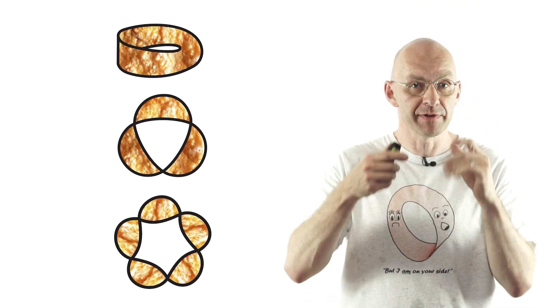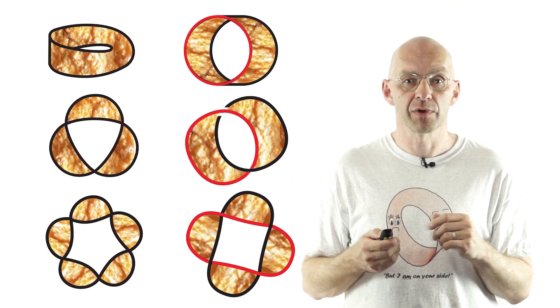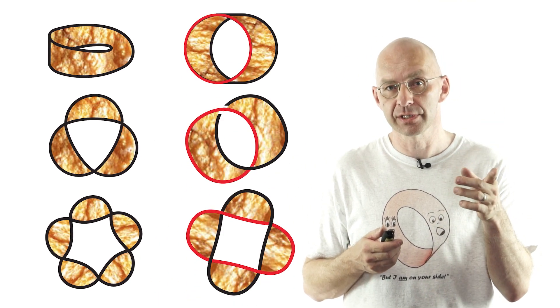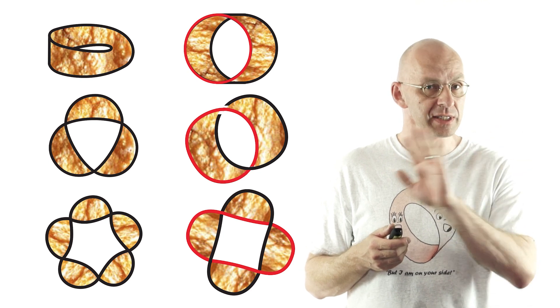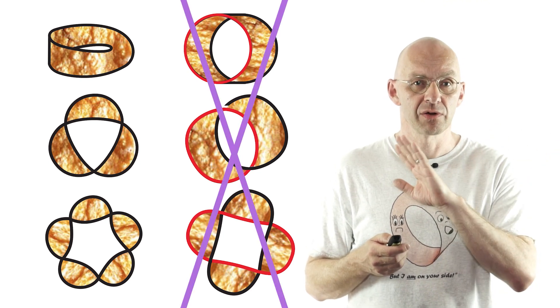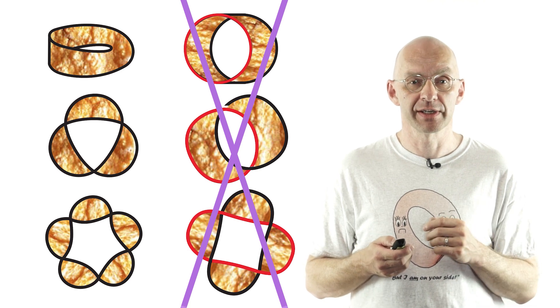If you do an even number of twists and then glue you get one of these surfaces. They all have two edges and two sides. Now these are not Möbius strips. These are called topological cylinders or just cylinders.